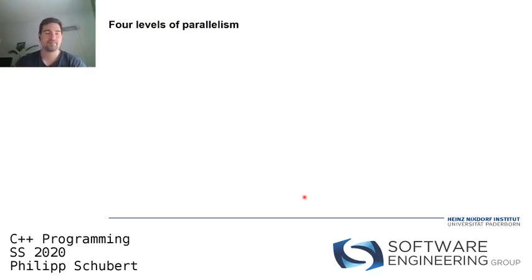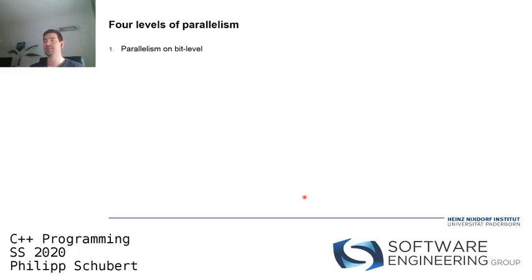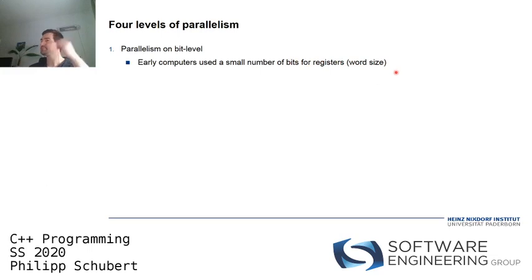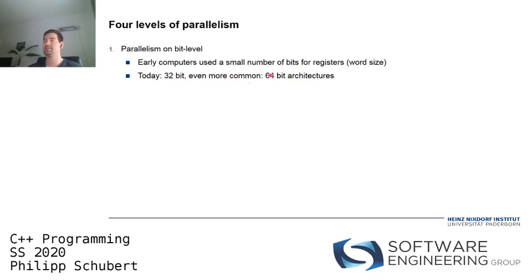Now, parallel computing — how can we make programs faster? How can we parallelize stuff to do more in less time? There are four levels of parallelism in your CPU. First, parallelism at the bit level: early computers used a small word size; today we typically have 64-bit architectures where one register can hold 64 bits at a given time. That's one level of parallelism.